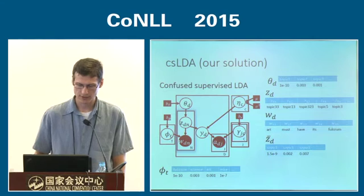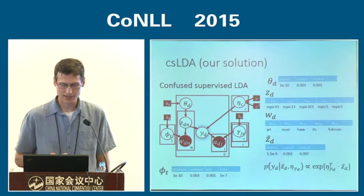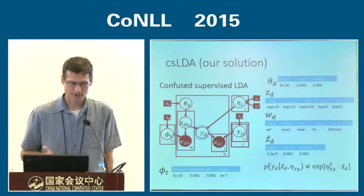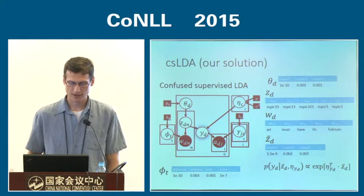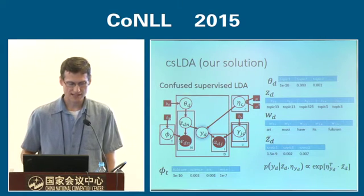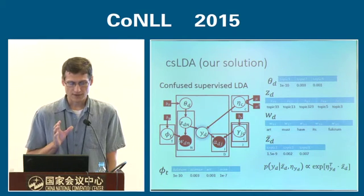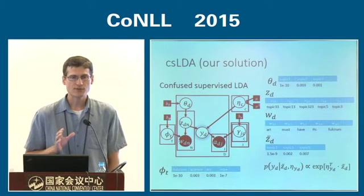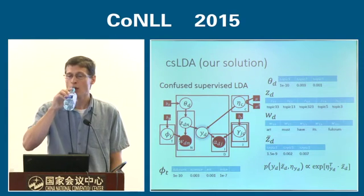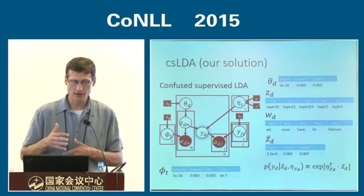Z-bar and theta sub-d should be similar, subject to stochasticity. We model Y as a log-linear function of our observed topical content Z-bar and class-conditional weights eta. This gives us a generative model over our data, but the unobserved Y's are no longer tightly coupled to the generative model — instead of simple class-conditional draws, we have a log-linear mapping.